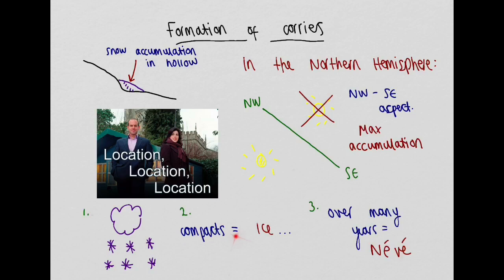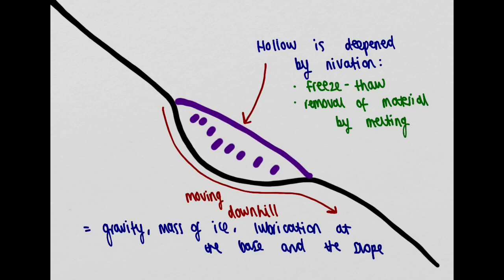The snow compacts into ice, and this accumulates over many years to compact into Neve. The hollow that the snow accumulates in is deepened by a process called nivation, which involves the combined effects of freeze-thaw and the removal of material by the melting of snow.